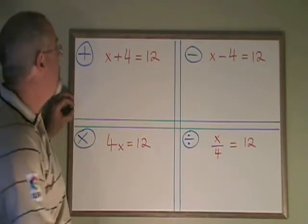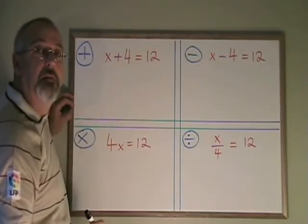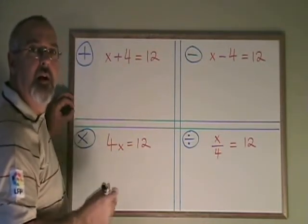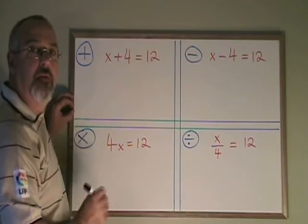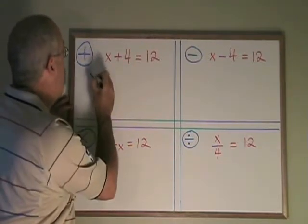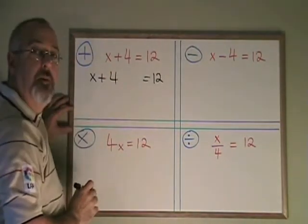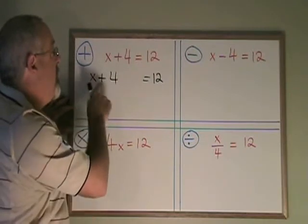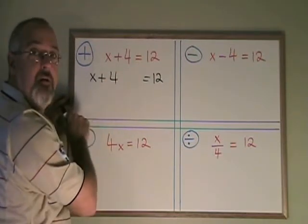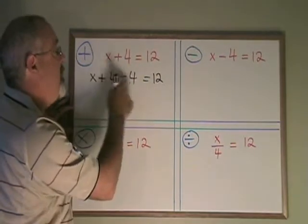Let's look at the first example, which is addition. Here our x has a 4 with it. The 4 is being added to the x. How do I get the 4 away from the x so that the x can be alone? What I do is I do the opposite of adding 4. If 4 is being added to the x, I subtract a 4 because these 4s will now cancel.